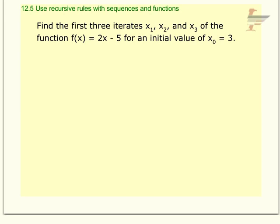This particular problem says, find the first three iterates of the function f(x) equals 2x minus 5 for an initial value of x sub 0 equals 3. So first notice it's function notation, and it's not sequence notation, so that's different. Finding the first three terms in function notation instead of the first three terms in sequence notation, but it's very similar.